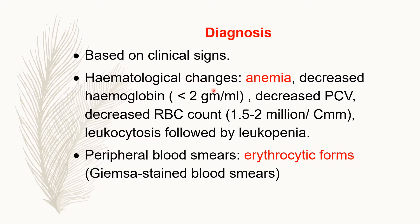There are hematological changes that we can measure in the laboratory. Theileriosis is a parasite found in blood, so there is lysis of RBC. Changes observed in blood are: decreased hemoglobin to a great extent, decreased packed cell volume, decreased RBC count, and leukocytosis followed by leukopenia. The Theileriosis organism multiplies in lymphocytes, so there is rupture of lymphocytes leading to leukopenia — a decreased number of leukocytes.